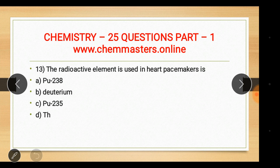Question thirteen: the radioactive element used in heart pacemakers is plutonium-238 — answer A. The other options were deuterium, plutonium-235, and thorium.